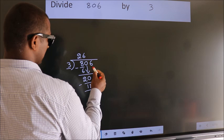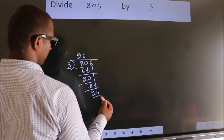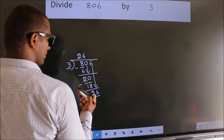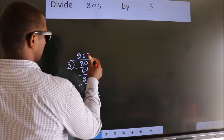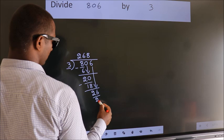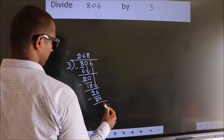After this, bring down the beside number. So 6 down. So 26. A number close to 26 in 3 table is 3 times 8, 24. Now we subtract. We get 2.